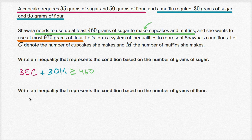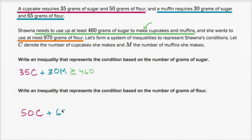Now write an inequality that represents the condition based on the number of grams of flour. She needs to use at most 970 grams of flour — no more than 970 grams. She uses 50 grams of flour per cupcake, so 50C, and 65 grams of flour per muffin, so plus 65M. This total amount of flour has to be less than or equal to 970.